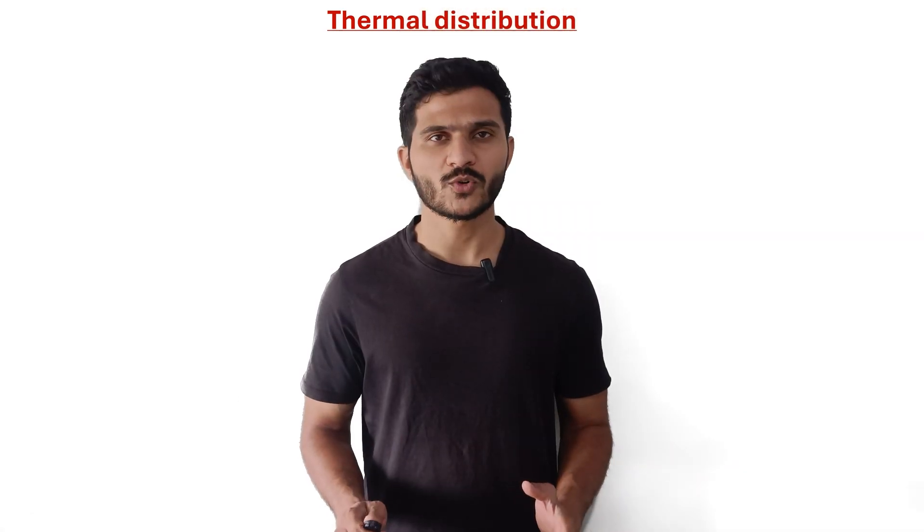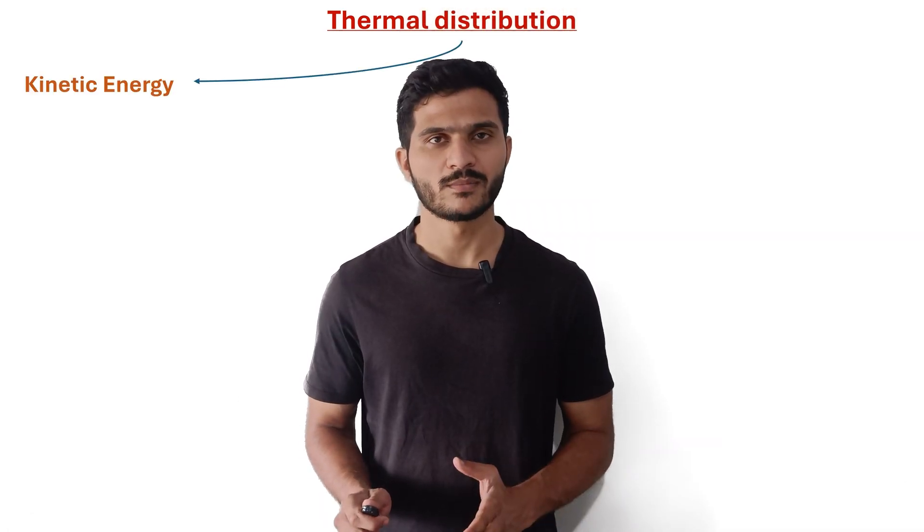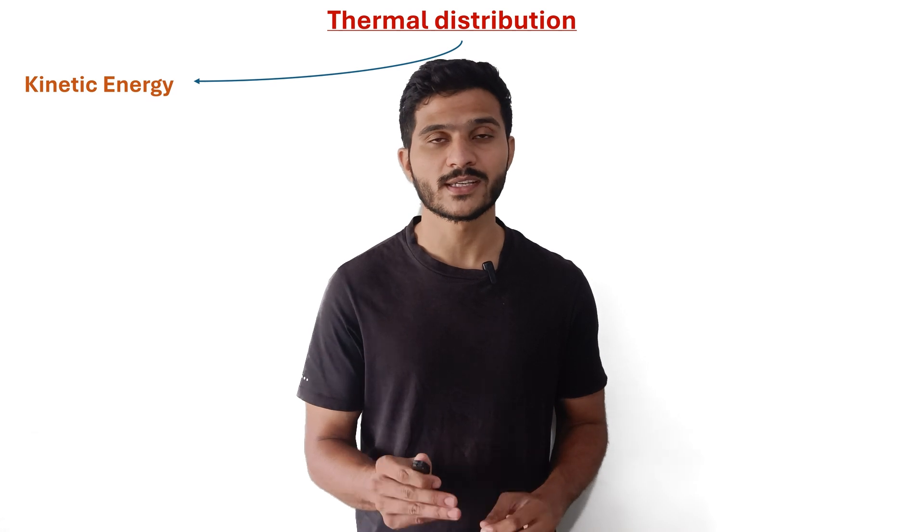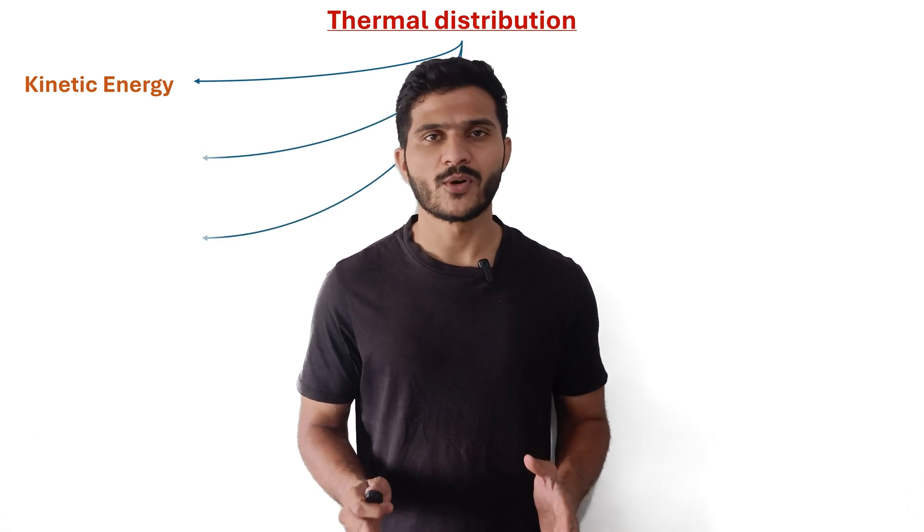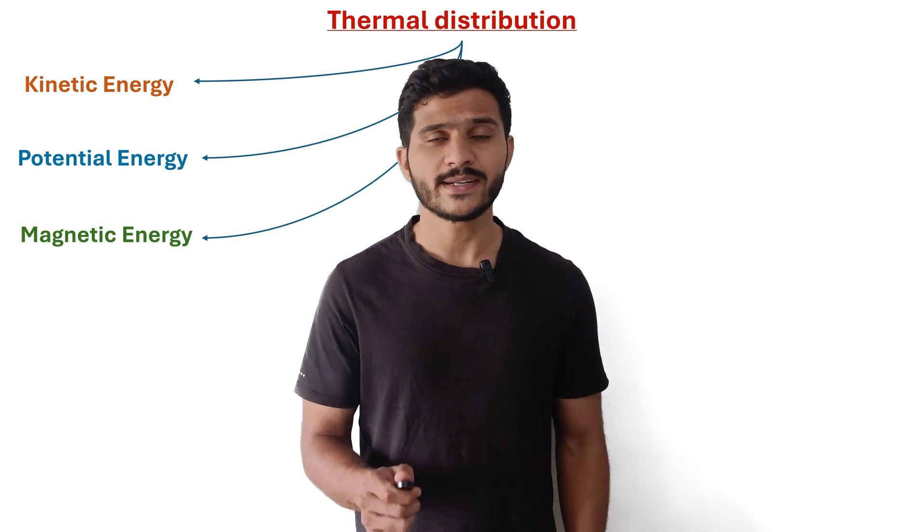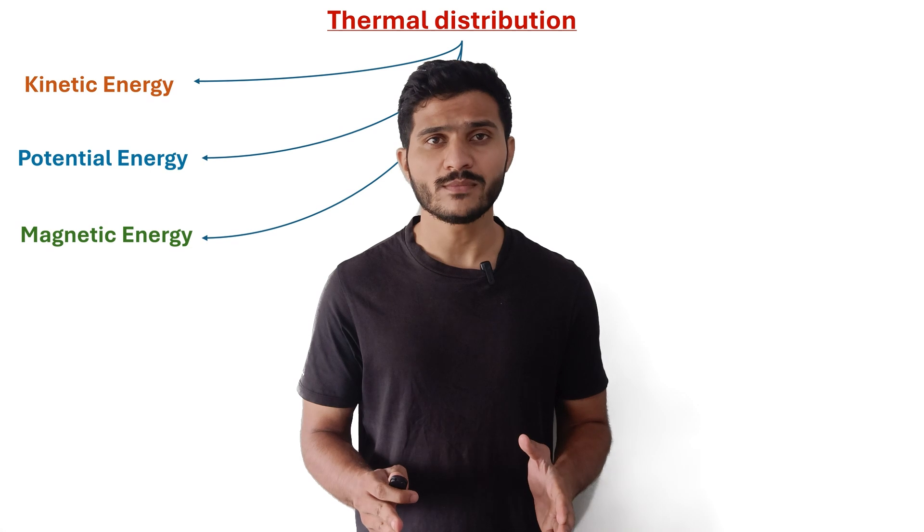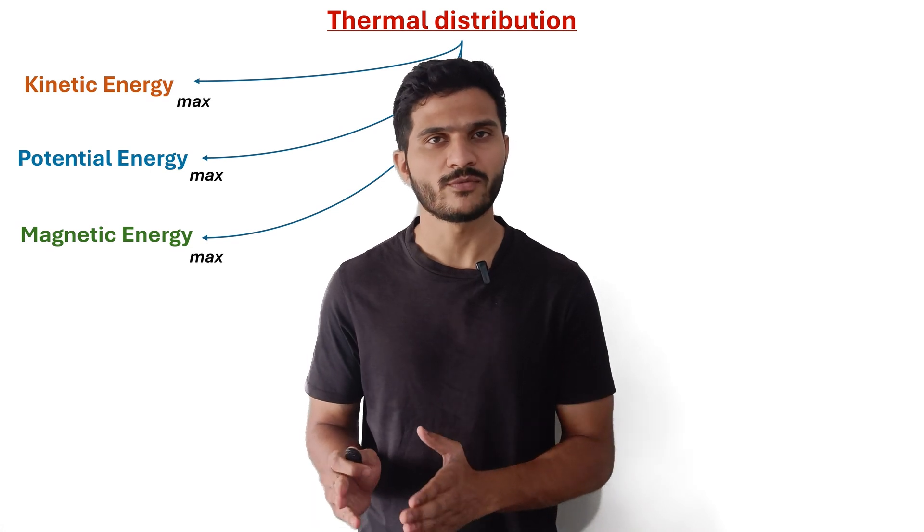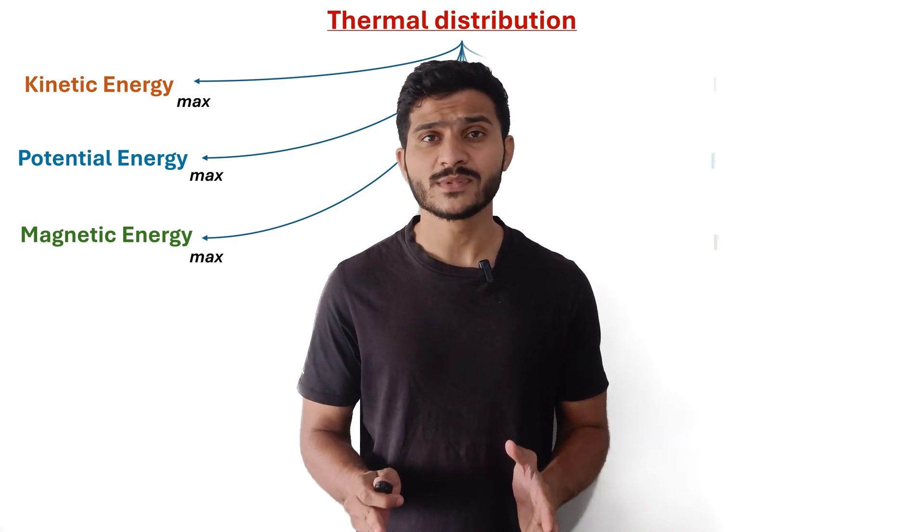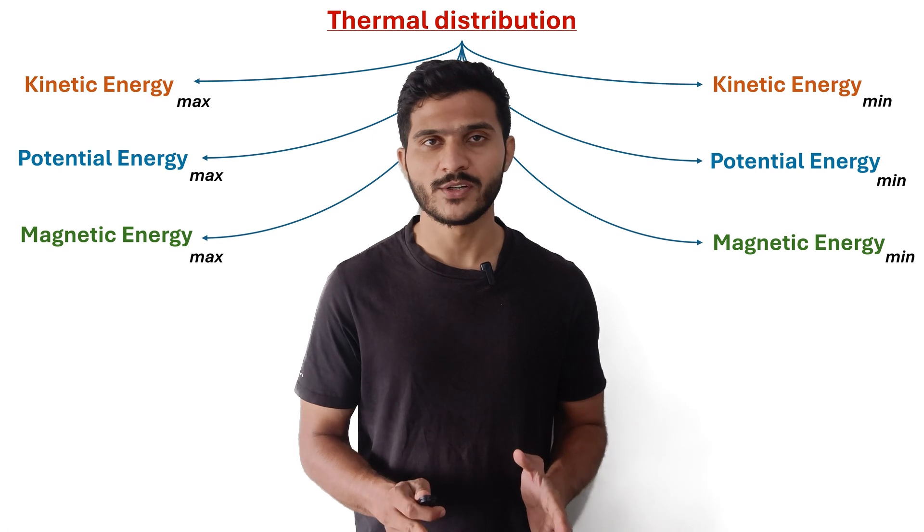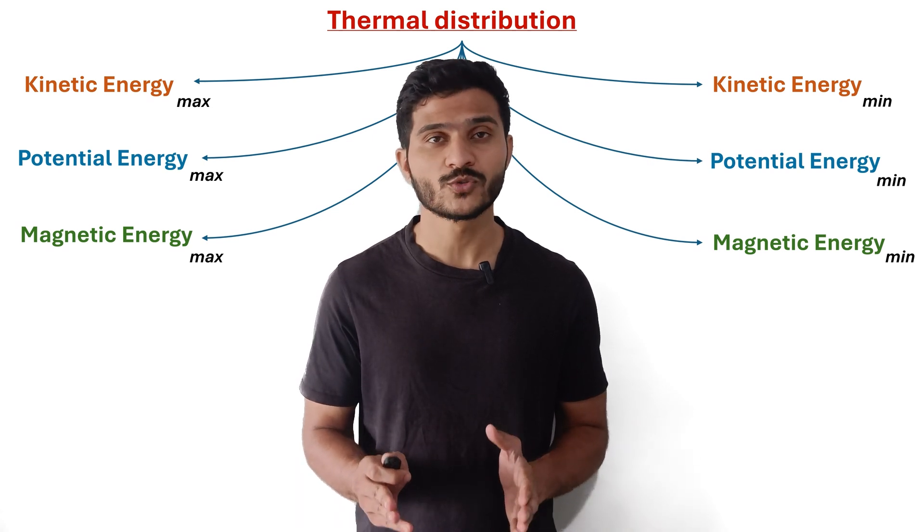Thermal distribution does not only take kinetic energy into account, but all forms of energy that particles can possess. For example, potential energy and magnetic energy. Atoms at negative absolute temperature are stable by themselves. All their energy forms are close to their maximum allowed values, same like atoms at positive temperature are stable due to all their energy forms close to their minimum values.